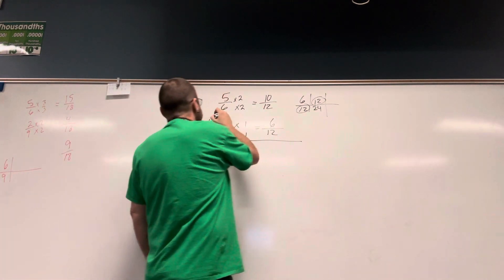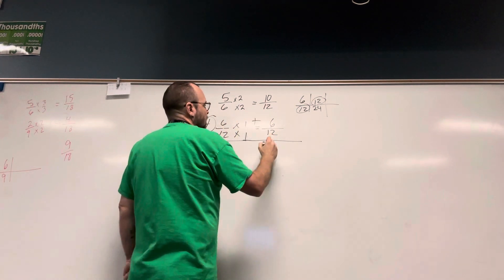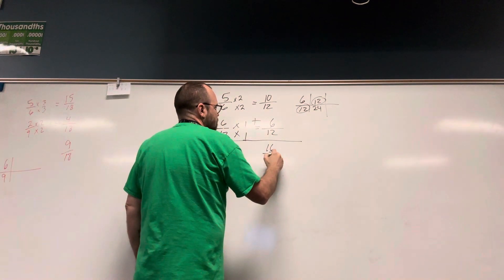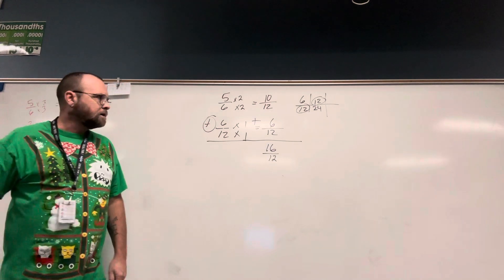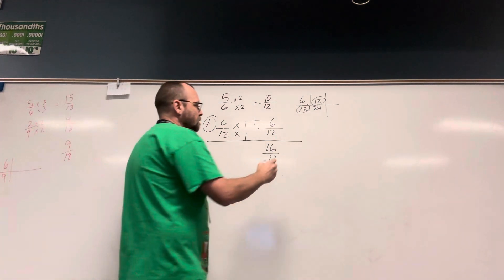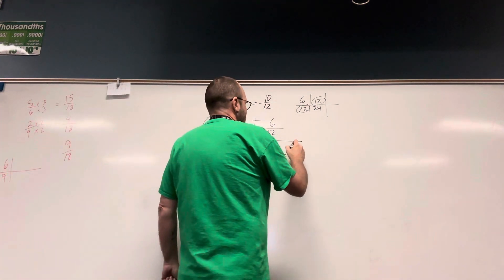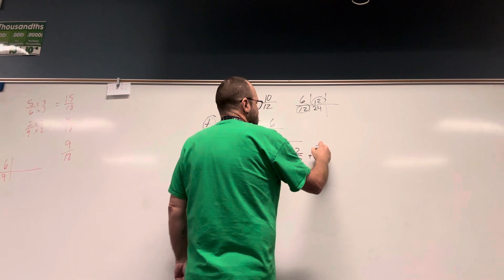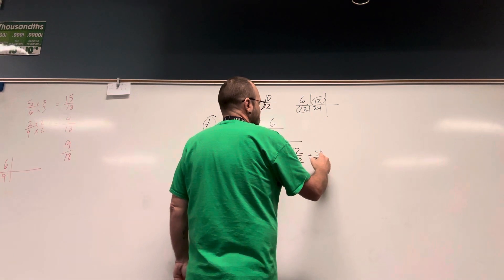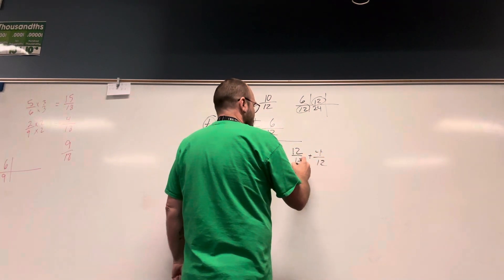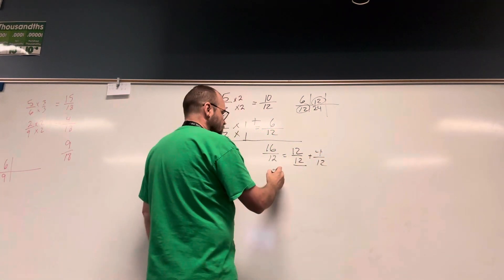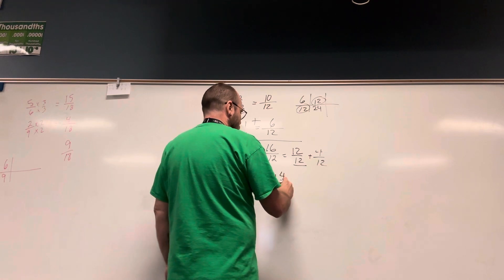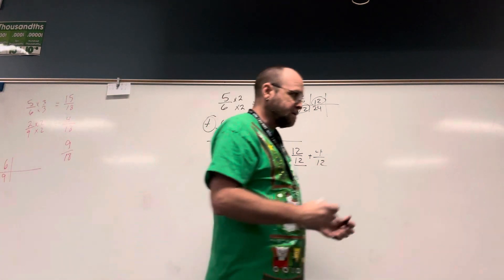This is an addition problem. I'm going to get 16 twelfths, which is the same as 12 twelfths plus 4 twelfths. Since 12 twelfths equals 1, I have 1 and 4 twelfths.